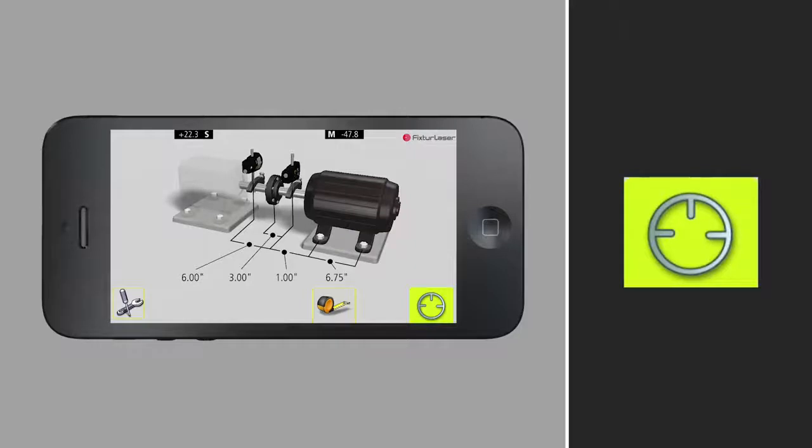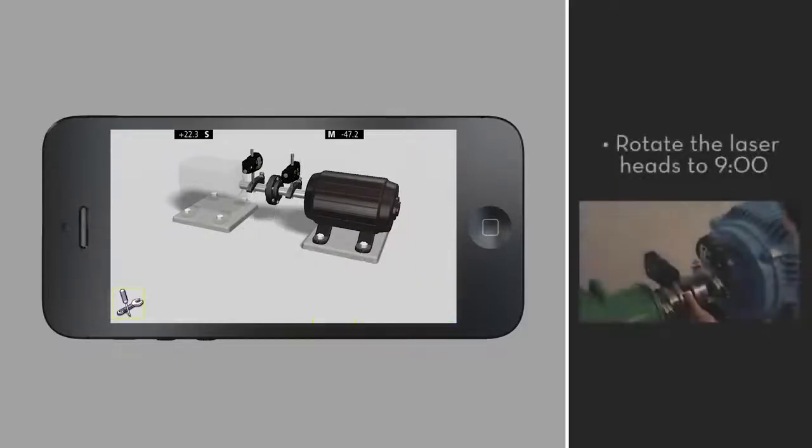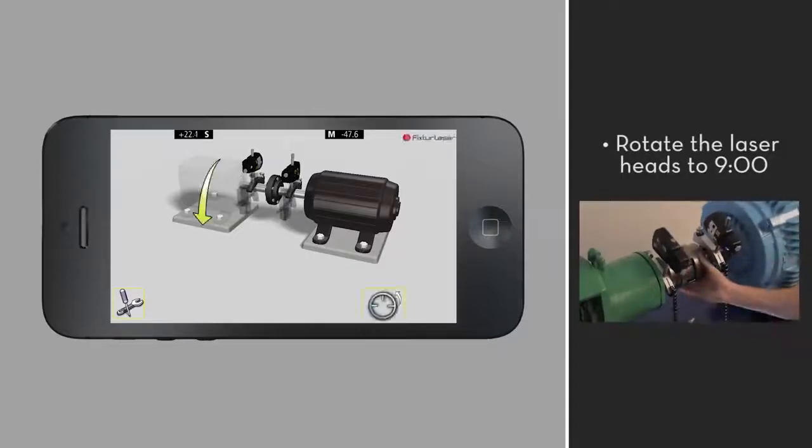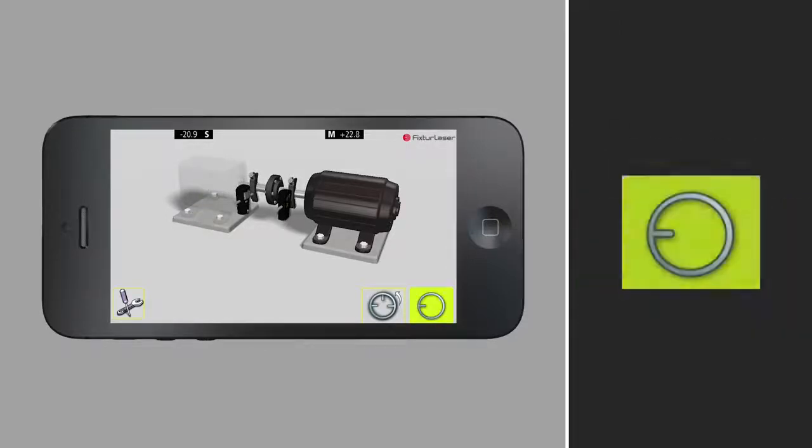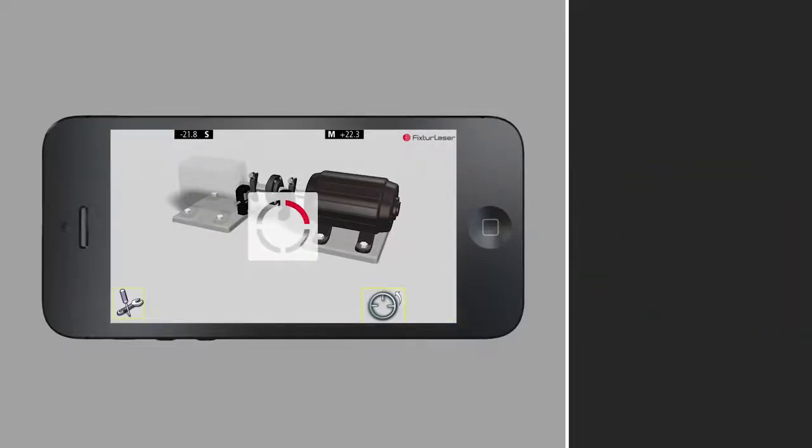Tap the measurement icon to begin measuring the alignment condition. Rotate the laser heads to 9 o'clock. When the laser heads are in the correct position, the measurement icon will appear. Press the measurement icon and wait while the measurement is taken.